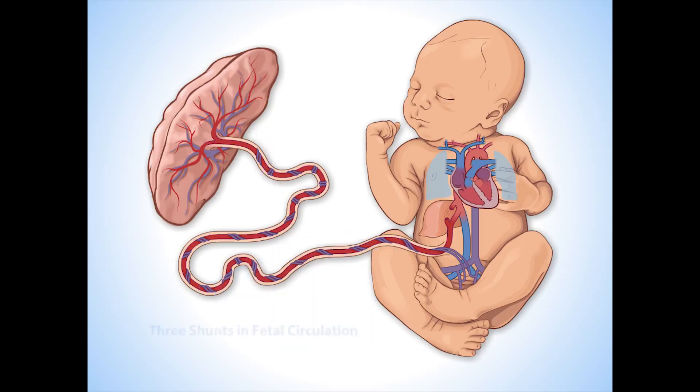Three shunts are present in fetal circulation, causing blood to flow in a different pathway to an adult: the ductus venosus, the foramen ovale, and the ductus arteriosus.